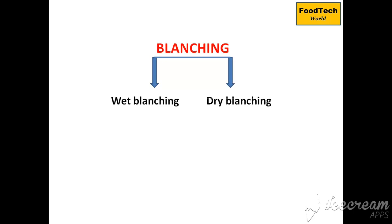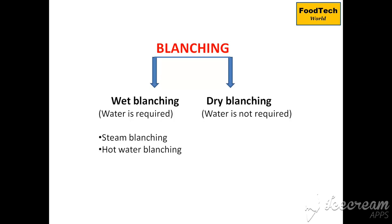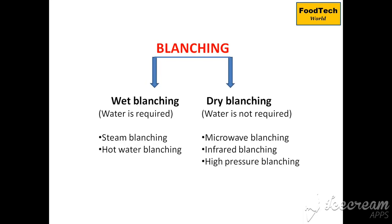Blanching is of two types: wet blanching and dry blanching. Wet blanching requires water and includes steam blanching and hot water blanching. Dry blanching does not require water and includes microwave blanching, infrared blanching, and high-pressure blanching. Dry blanching methods are not yet used commercially on a large scale; only wet blanching methods are commonly used.